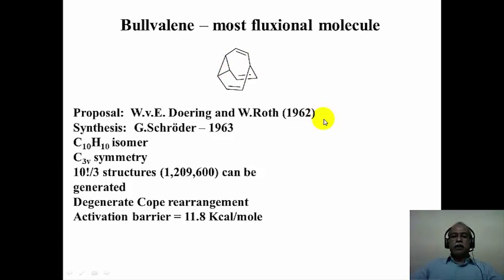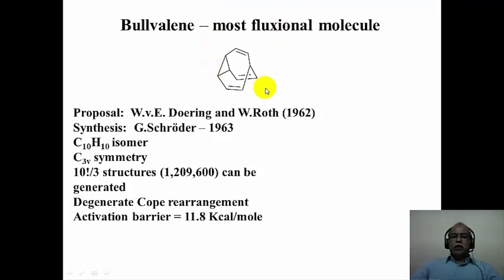This molecule is capable of undergoing molecular rearrangement and the number of structures that can be generated is 10 factorial divided by 3, because there are 10 carbons and the molecule possesses a C3 axis of symmetry. These rearrangements are essentially degenerate rearrangements - upon rearrangement, bulvaline produces itself. This kind of rearrangement is called a degenerate rearrangement, and bulvaline does so by means of the Cope rearrangement, which is a 3-3 sigmatropic rearrangement.